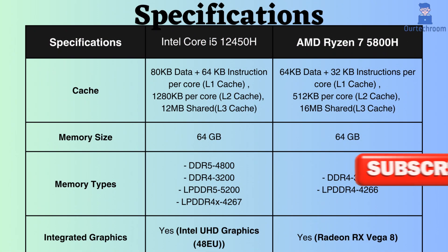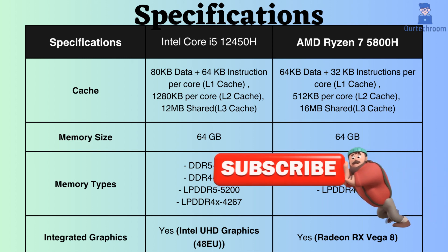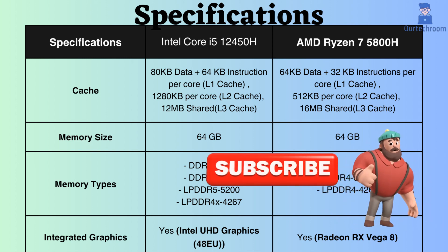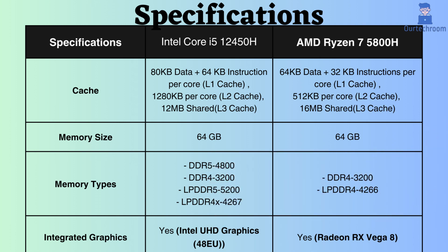The AMD Ryzen 7 5800H has more L3 cache overall, which helps applications that require storing a lot of data close to the processor for faster access. But the Intel Core i5-12450H has more L2 cache per core, which can be better for tasks that need quick access to data. The difference in L1 cache size probably won't matter much for most uses.